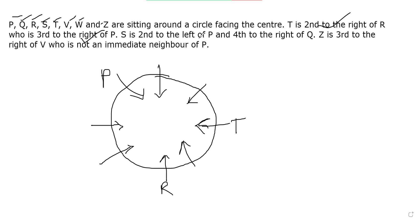S is second to the left of P. So this is left. S is second to the left of P means S is here and fourth to the right of Q. So one, two, three, four. Yeah, so S is fourth to the right of Q.